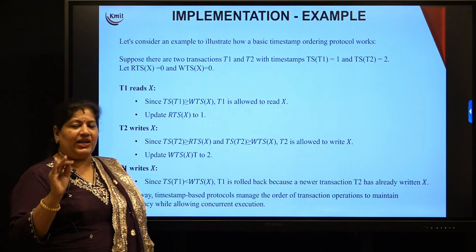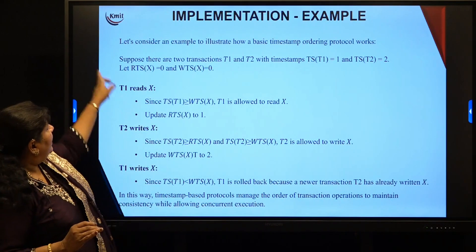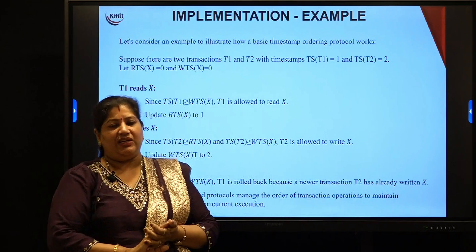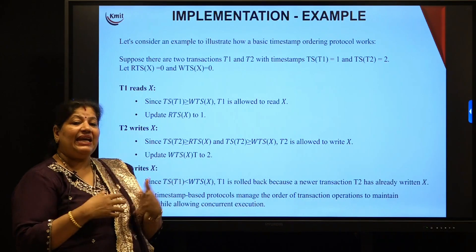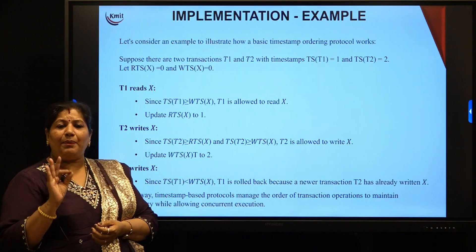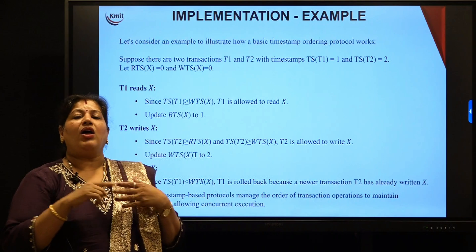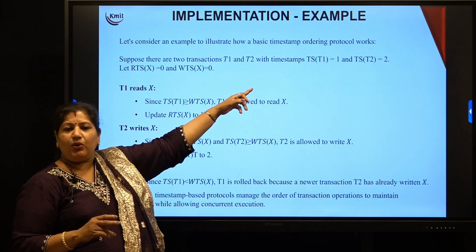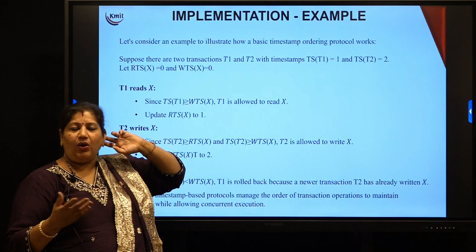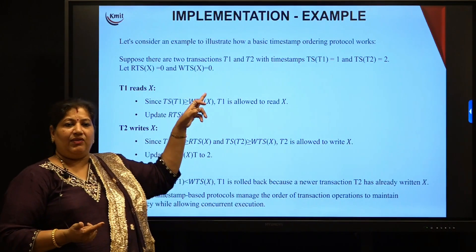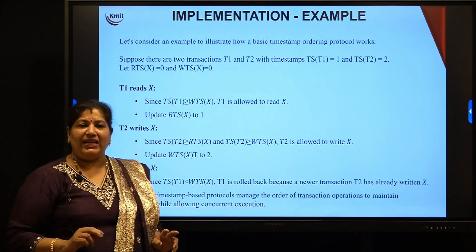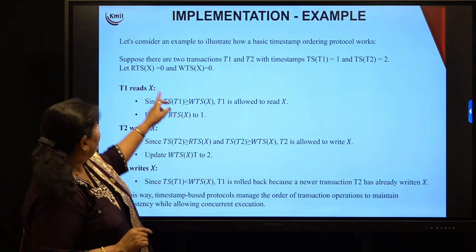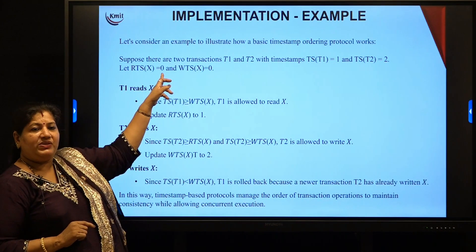Let us see a quick implementation. Timestamps are the system's clock value — whenever a transaction enters, it is associated with a unique number, the time of entry. The general practice is to initialize read and write timestamps with 0 or minus infinity, so that the first read or write operation is allowed since timestamps are positive numbers. Assume two transactions T1 and T2 with timestamp values 1 and 2 respectively. The initial values of RTS and WTS on data object x are 0.